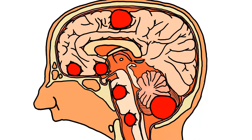The benign tumours of the brain are the adenomas, gliomas, astrocytomas grade 1 and 2, craniopharyngiomas, and pituitary adenomas, for example. The malignant ones are the blastomas, sarcomas, lymphomas, leukemias, germ cell tumours, and carcinomas. For example, the pituitary adenoma is benign, while the pituitary carcinoma is malignant.